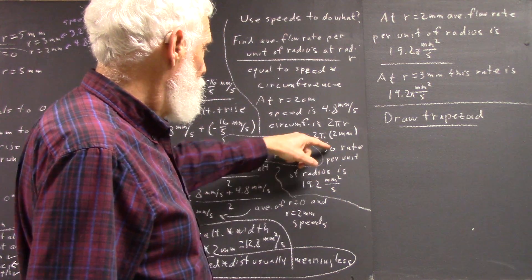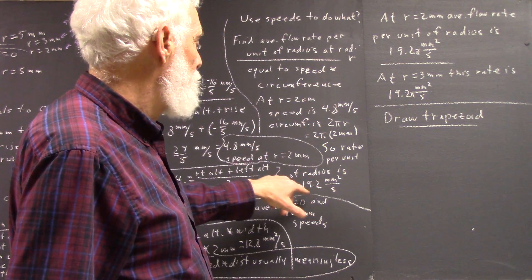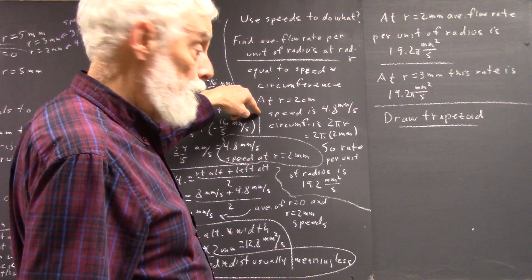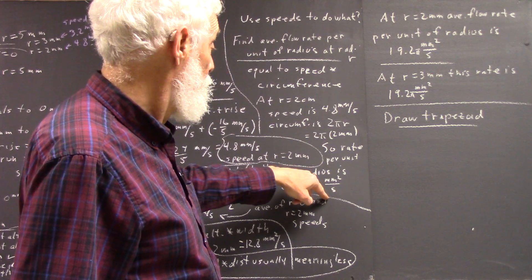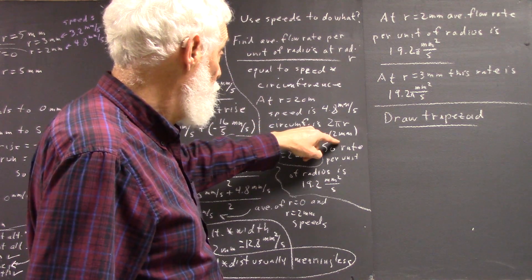So when we multiply these, we get the rate per unit of radius at the 2 centimeter radius, and that's 19.2 millimeters squared per second. Just multiplying this by this.